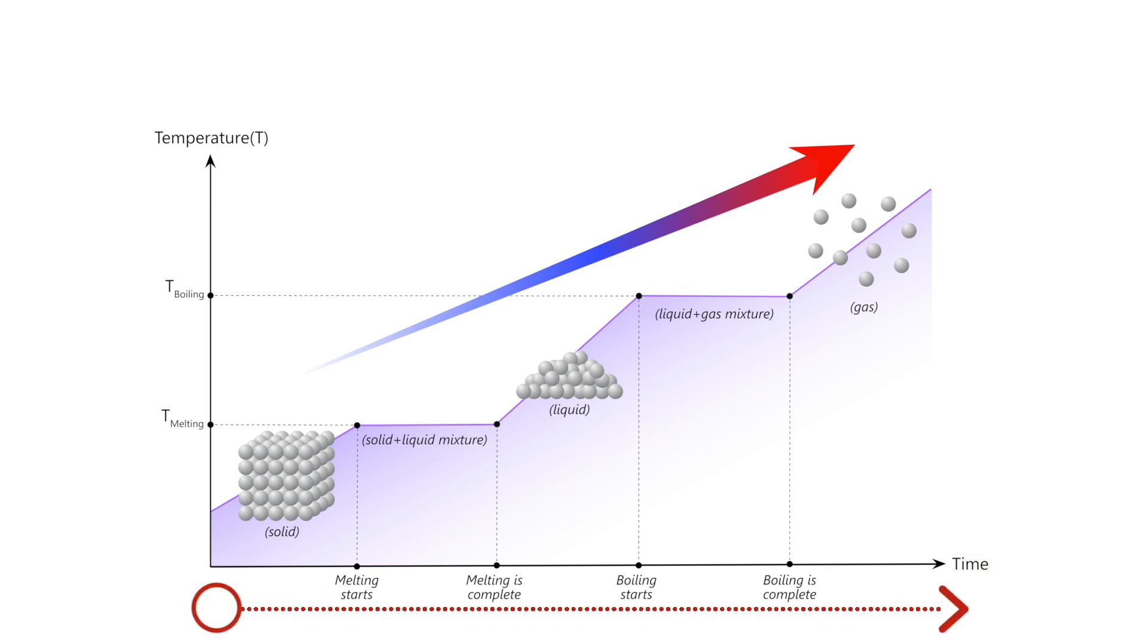Now that we understand how the graph is organized, let's talk about what it says. Starting at time zero, the matter is a solid at a cool temperature. As time increases, what do you notice happens to the temperature of the matter? It is also increasing. This continues until the temperature hits the melting point. At this moment, the temperature stops increasing as all of the solid melts into liquid. This means that the forces and bonds holding the solid together in its tightly packed shape are slowly breaking, allowing the particles to move a little more freely as a liquid.